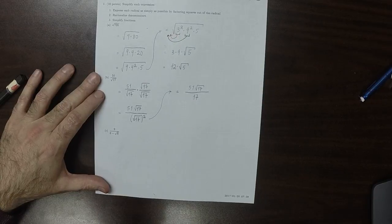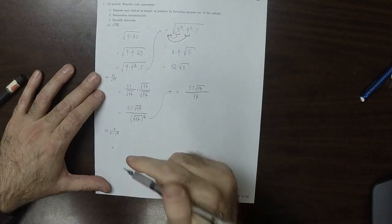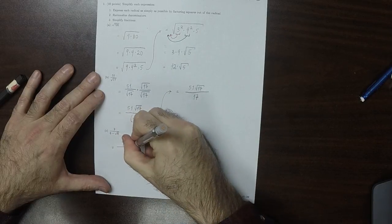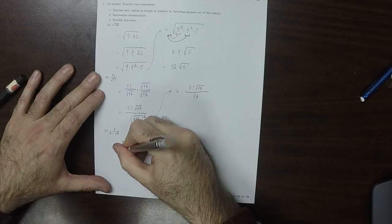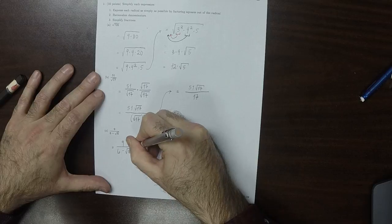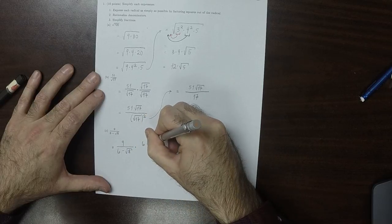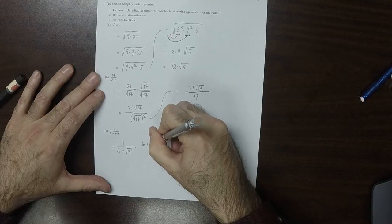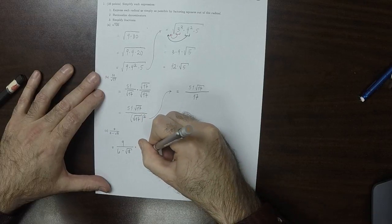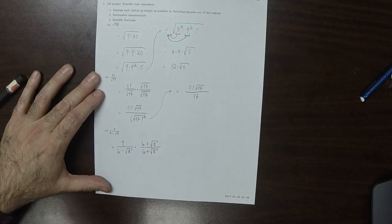And for the last one, similar trick, but it looks slightly different. 9 divided by 6 minus square root 8. We'll multiply by 6 plus square root 8, divide by 6 plus square root 8. So again, we're multiplying by 1.